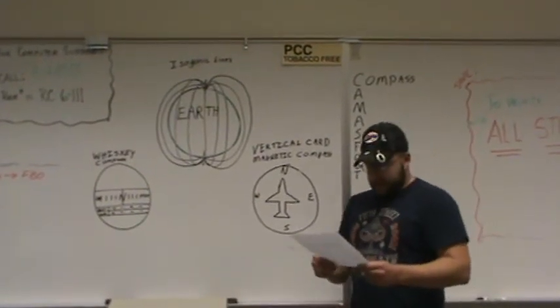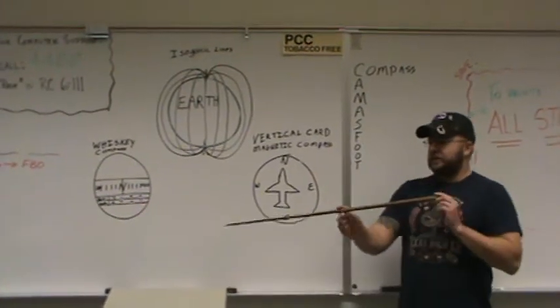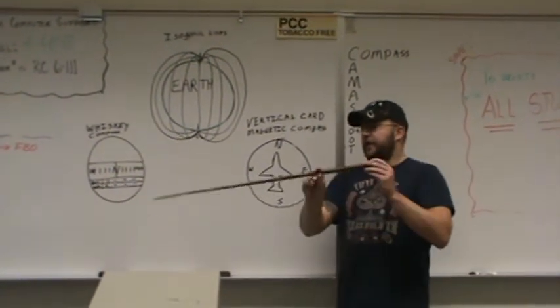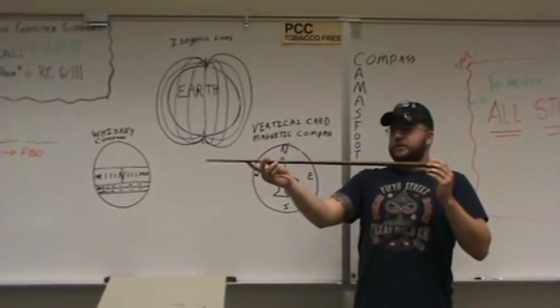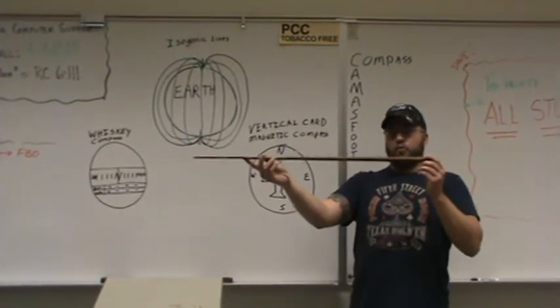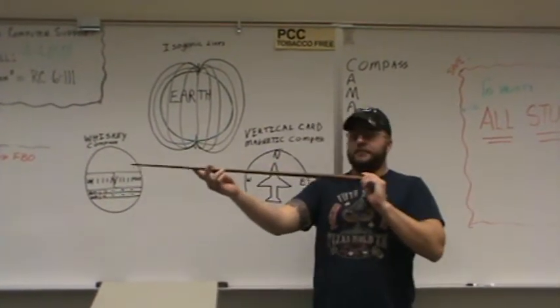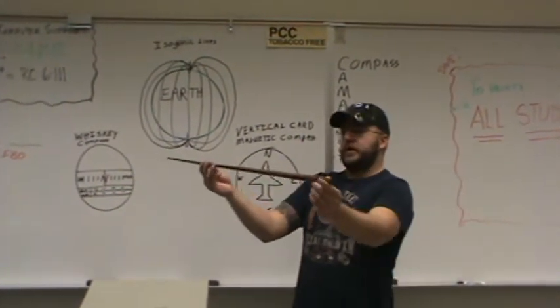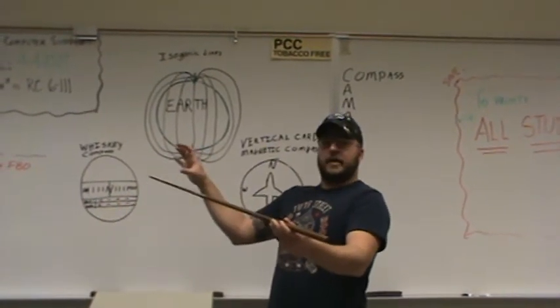During acceleration, the weight will swing back. So if we are heading east, this direction, and you accelerate, the weight will have a tendency to swing this way. And if you decelerate, it would swing this way. And that then shows as a change in heading on the compass.